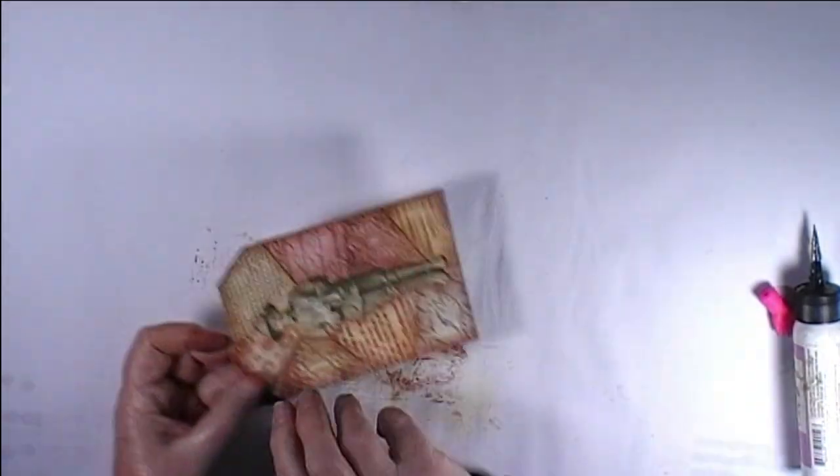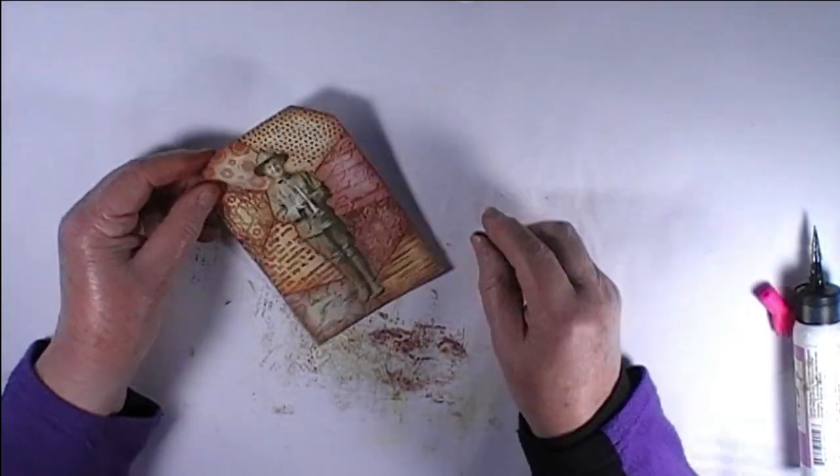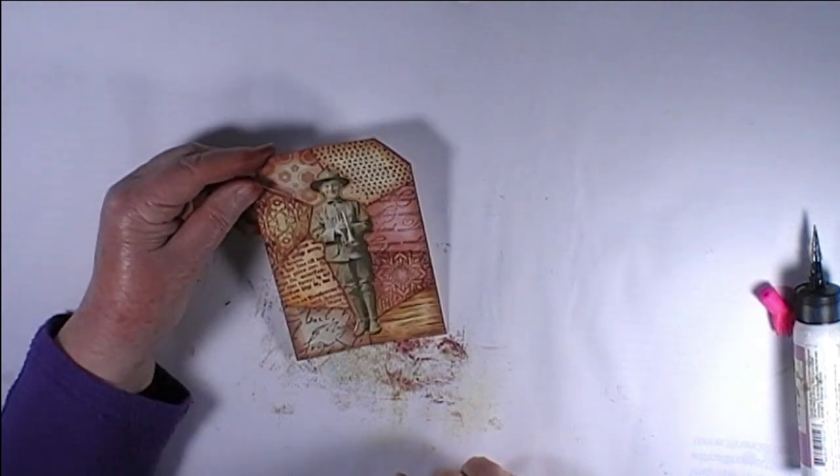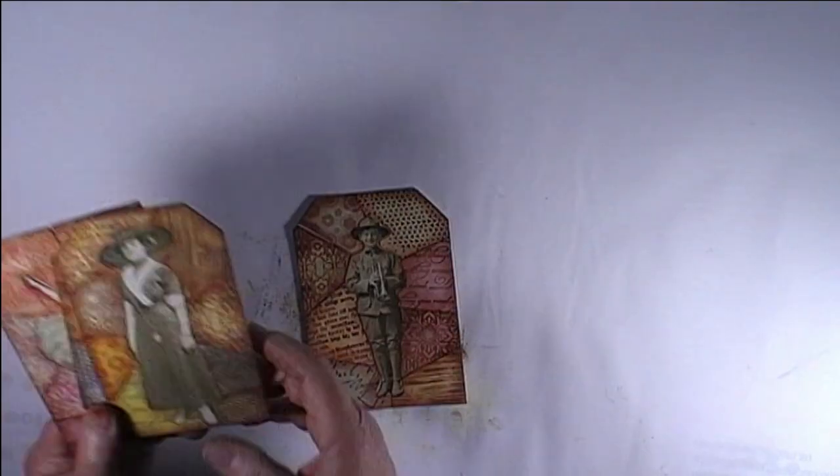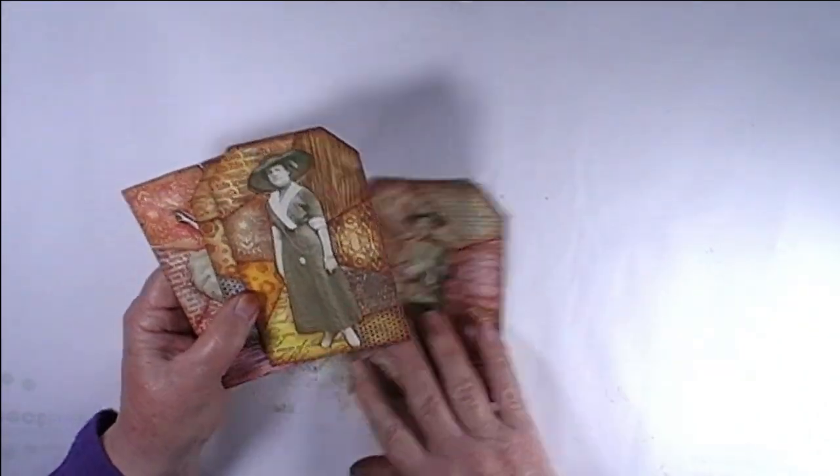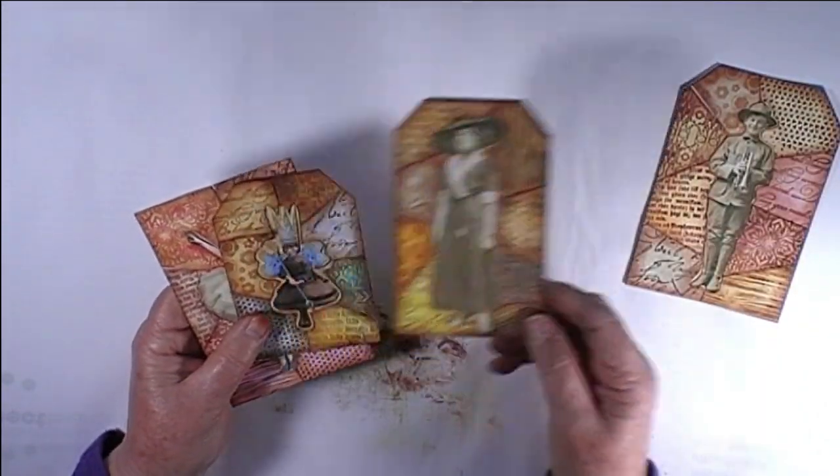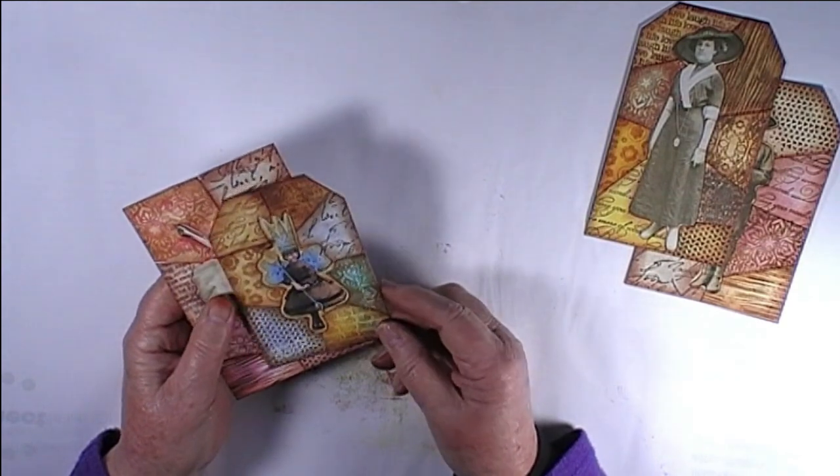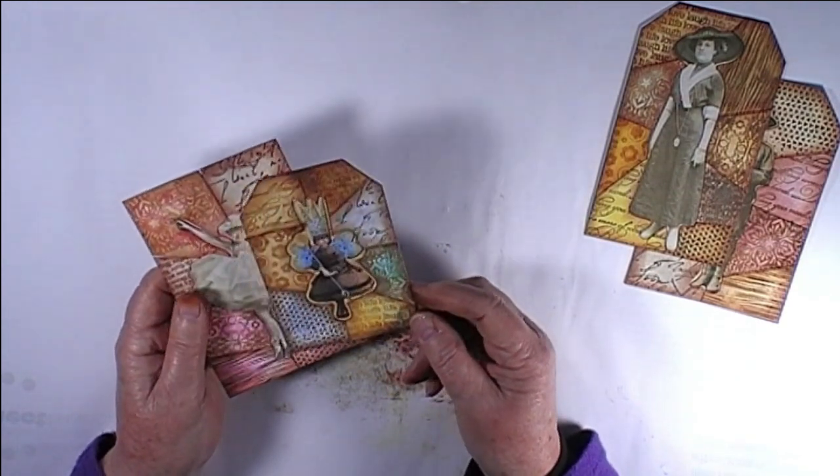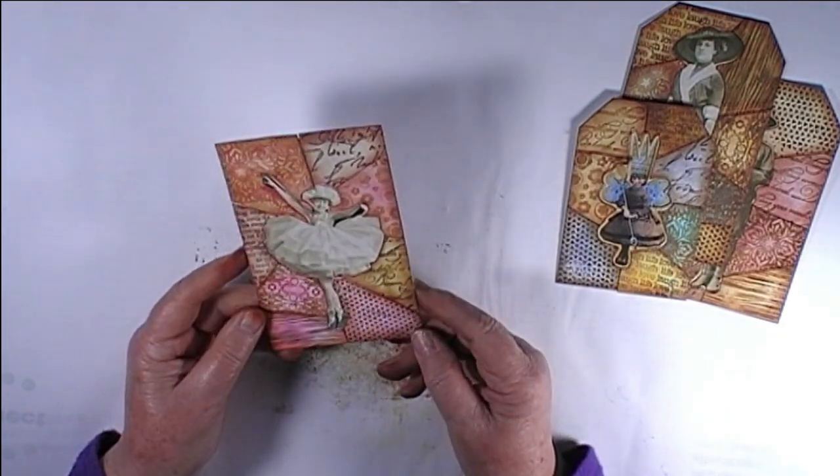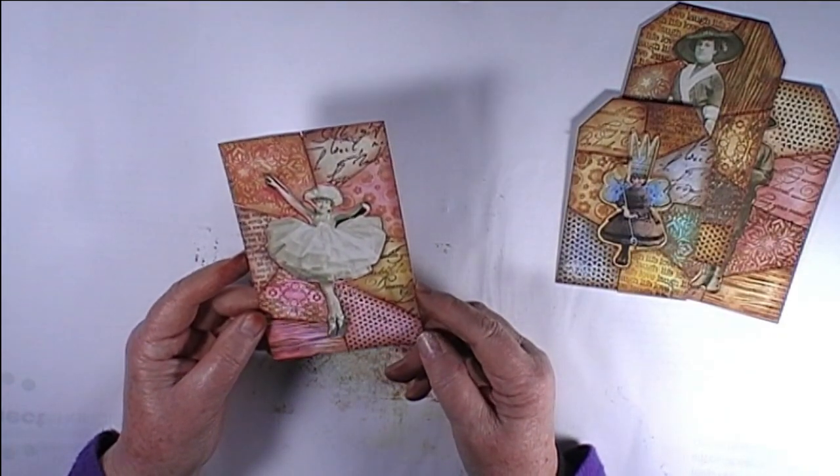There we have it, the jigsaw tag. Here's some others I made previously. I did this one with the lady in, as you saw at the beginning. This one's got a kind of fairy in there. And another one of Tim Holtz's people. That's a ballerina.